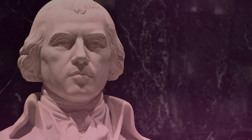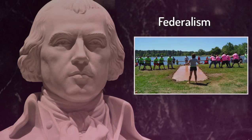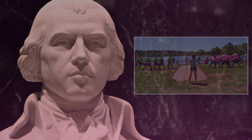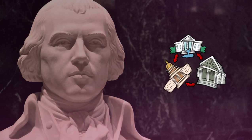Federalist 39 contains additional details of Madison's conception of a Republican form of government and also a design of federalism in which state and federal governments share power. Federalist 51, also authored by Madison, discusses the need for checks and balances between branches of government in order to safeguard liberty, and also discusses factions at the end.